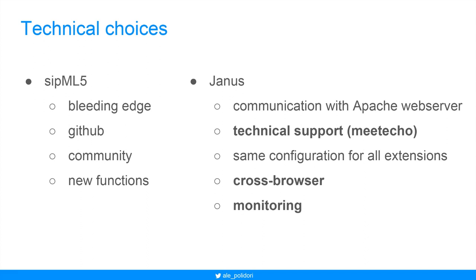What were the reasons to migrate from one implementation to another? We first chose SIPML5 because it has a huge community of support on Google Groups, many features, it is open source, and it was the only implementation available when we started development. However, over time as a bleeding-edge technology, your code could break suddenly and you'd have to fix and deploy it to everyone immediately. This kind of operation becomes very expensive in terms of money and time. So we decided to switch to Janus Gateway.